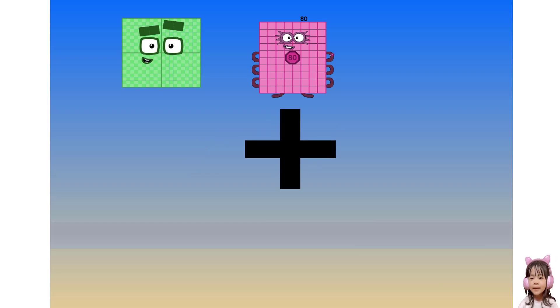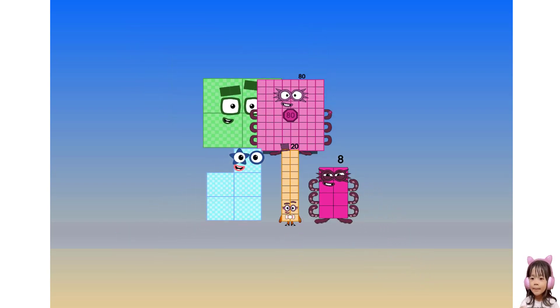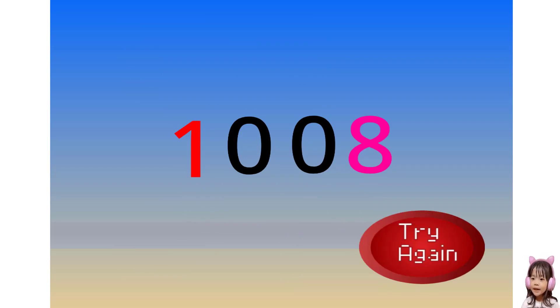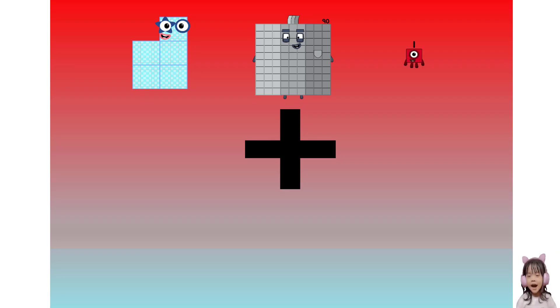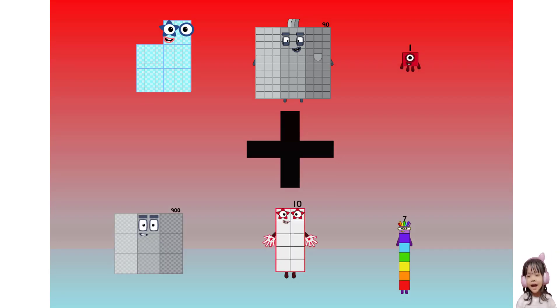480 plus 528 equals 1,008. 591 plus 917 equals 1,508.